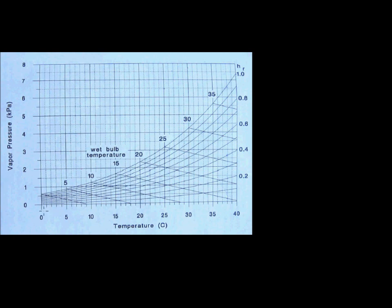The vertical lines going across this graph represent temperature in degrees Celsius - so the x-axis is temperature, the y-axis is vapor pressure, and then these curved lines here represent relative humidity.